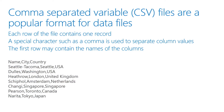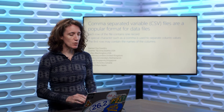Comma-separated variable files, or CSV files, are an extremely popular format for data files. A lot of times when you're searching for data, this will be the format it's in. Each row of the file contains one record, and there's a special character — often a comma — used to separate the different column values. The first row may contain the names of the different columns, so you know what the value in each row represents.